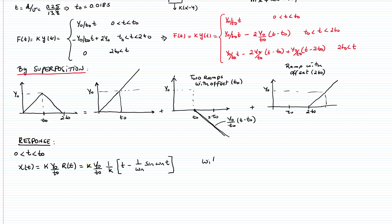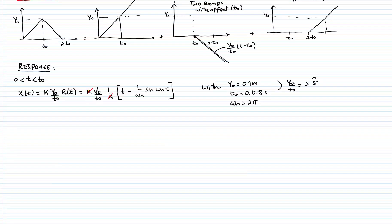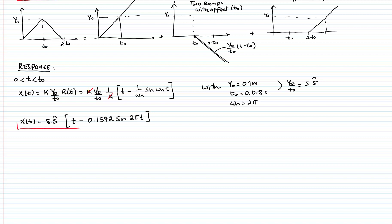For this problem: y₀ = 0.1 m (height of bump), t₀ = 0.018 s, and ωₙ = 2π/T = 2π rad/s since the natural period is 1 second. The ratio y₀/t₀ = 5.555... m/s, and 1/ωₙ = 0.1592 s. So the response for 0 < t < t₀ is: x(t) = 5.555t − 0.1592·sin(2πt) meters.